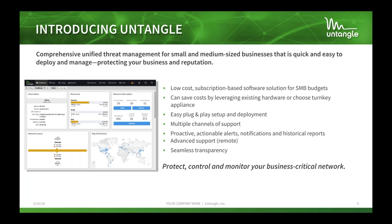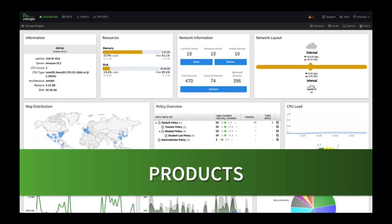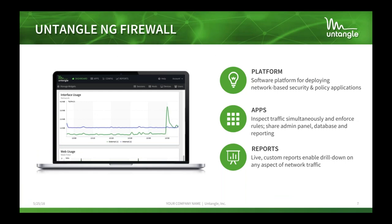Untangle can be either a router or behind a router in transparent bridge mode. Regardless of router or bridge mode, Untangle is an inline appliance — this isn't a proxy, we can't do reverse proxy, but this is a quick easy one-stop device to basically protect, control, and monitor your entire network.